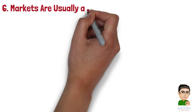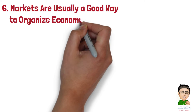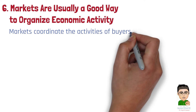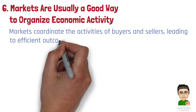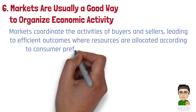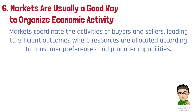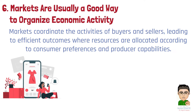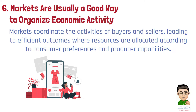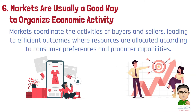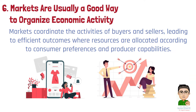Number 6: Markets are usually a good way to organize economic activity. Markets coordinate the activities of buyers and sellers, leading to efficient outcomes where resources are allocated according to consumer preferences and producer capabilities. The price mechanism in markets serves as a signal for resource allocation. Example 1: The rise of online marketplaces allows consumers to find the best prices for goods, leading to efficient allocation of resources and consumer satisfaction. Example 2: The stock market efficiently matches investors with companies seeking capital, facilitating the growth of businesses and providing returns for investors.